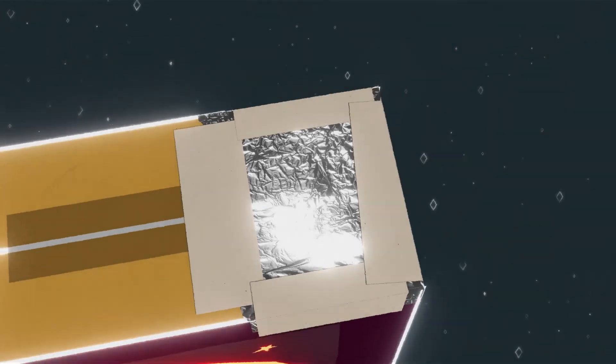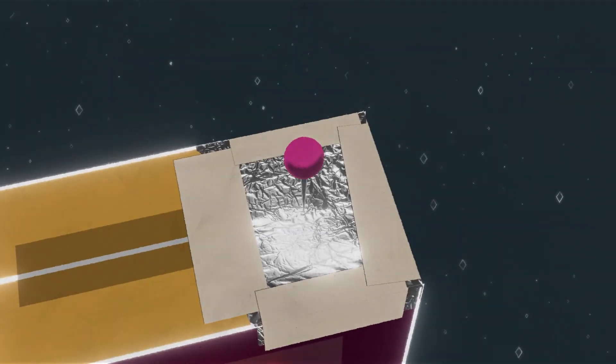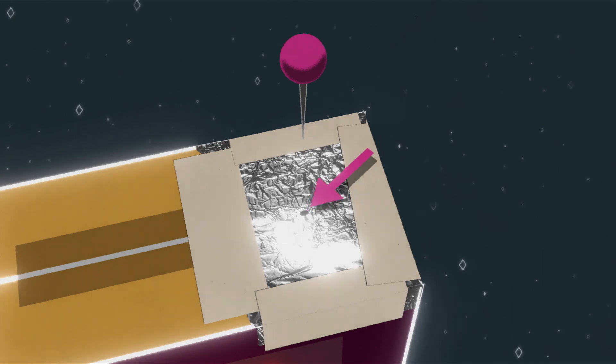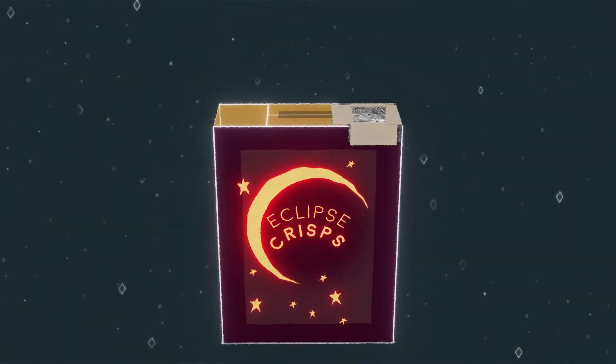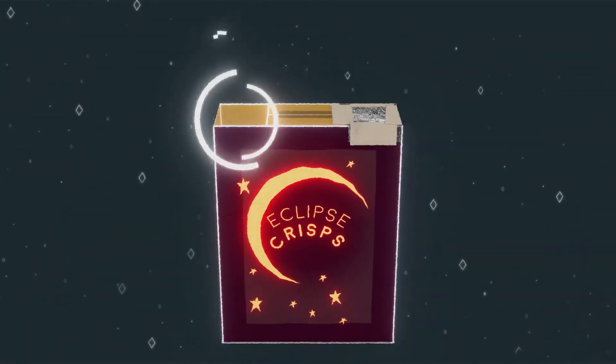After you make sure the foil is on, you get a push pin and poke a tiny hole in there. It doesn't need to be too big because if it's too big then it won't be as accurate.